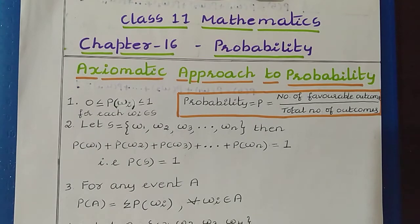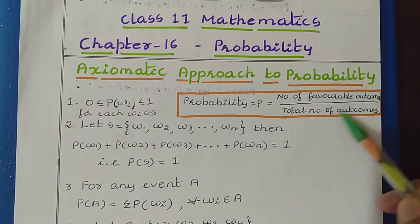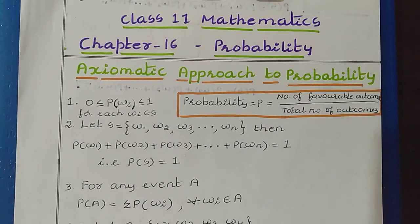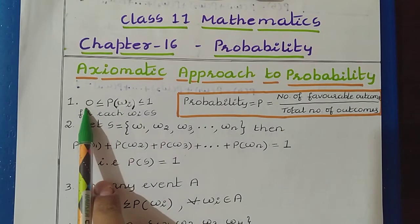Before understanding the rules, we already know that probability means the number of favorable outcomes divided by the total number of outcomes. It is the ratio of the number of favorable outcomes and total number of outcomes. So this probability value can be in between 0 to 1. If you consider any random experiment, in that experiment we can have the sample space, and based on the sample space we can have certain events. So the probability value of the event is in between 0 to 1.